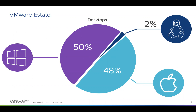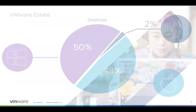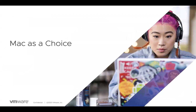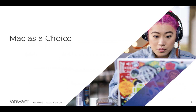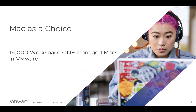On the Mac front, we did acquire Carbon Black and Pivotal recently, and they have a large Mac user base, so we will see that number shift very soon. Here at VMware we offer Mac as a choice — when colleagues are starting at VMware, they can choose their hardware and what works best for them. Out of that, about 15,000 people have chosen to use Macs today inside of VMware, which is a big number from where we first started.